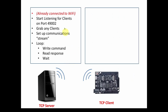In the previous video, we came up with these basic steps that we're going to convert to code in this video to program this TCP desktop server. We're going to assume it's already connected to Wi-Fi. We're going to start listening for clients on port 49002. If any clients try to connect, we're going to grab them, connect with them, set up a stream, and then write a simple loop that sends a command to the client, reads whatever response it sends, waits, and loops again.